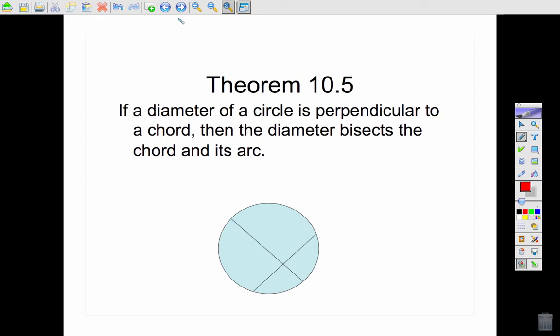Theorem 10-5, if the diameter of a circle is perpendicular to a chord, then the diameter bisects the chord and the arc. So if I have a right angle here and this is a diameter, I know that this chord is being bisected and this arc is being bisected.